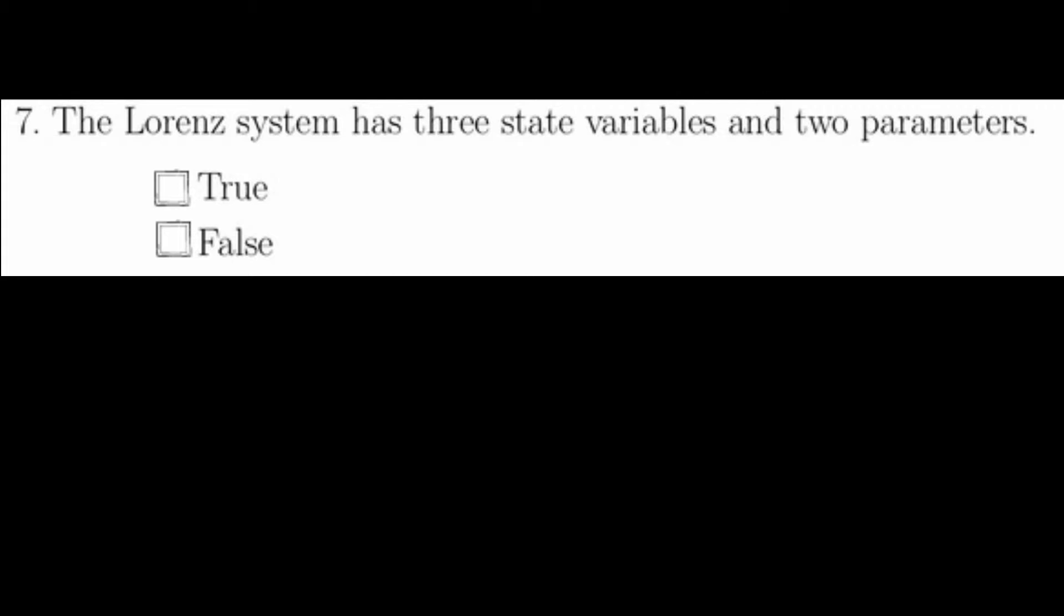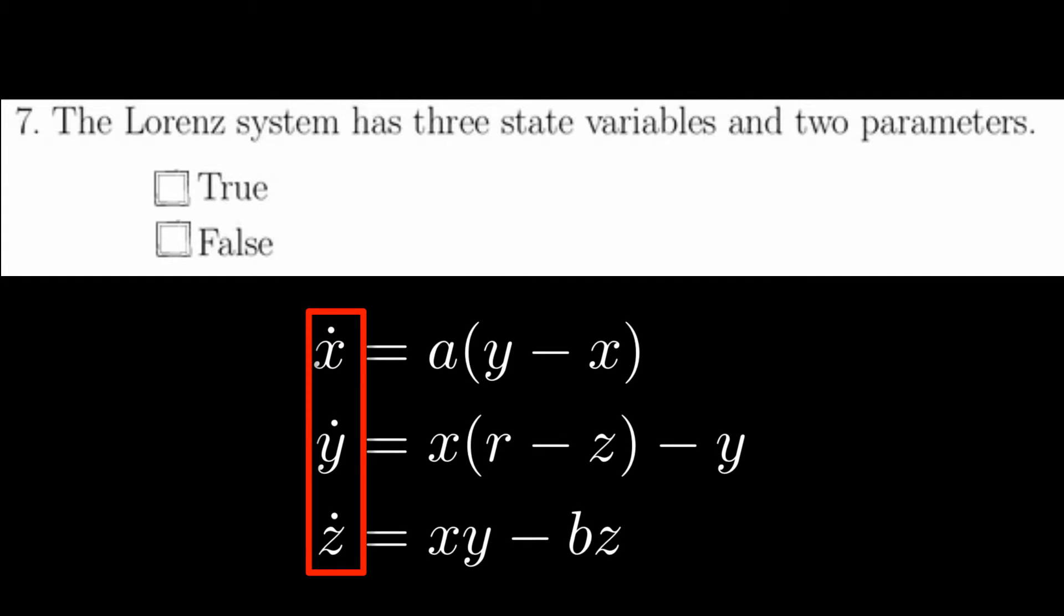For question seven, recall the Lorenz system. This system has three state variables and three parameters, not two, so this question is false.